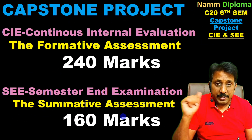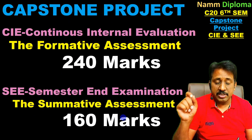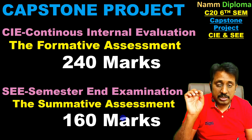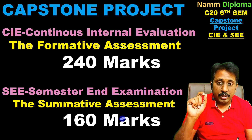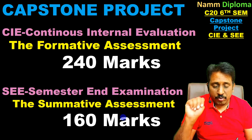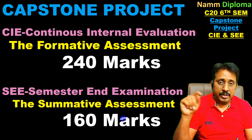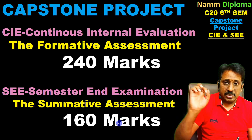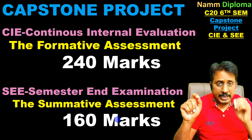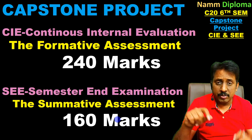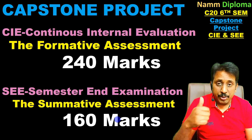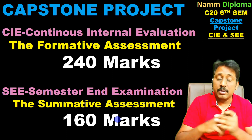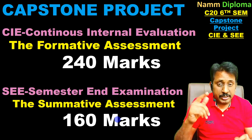This is the complete view: CAE (formative assessment) is 240 marks and SWE (summative assessment) is 160 marks, giving a total of 400 marks for the complete 6M semester. For more detail on CAE and SWE, please comment, subscribe, and stay updated.